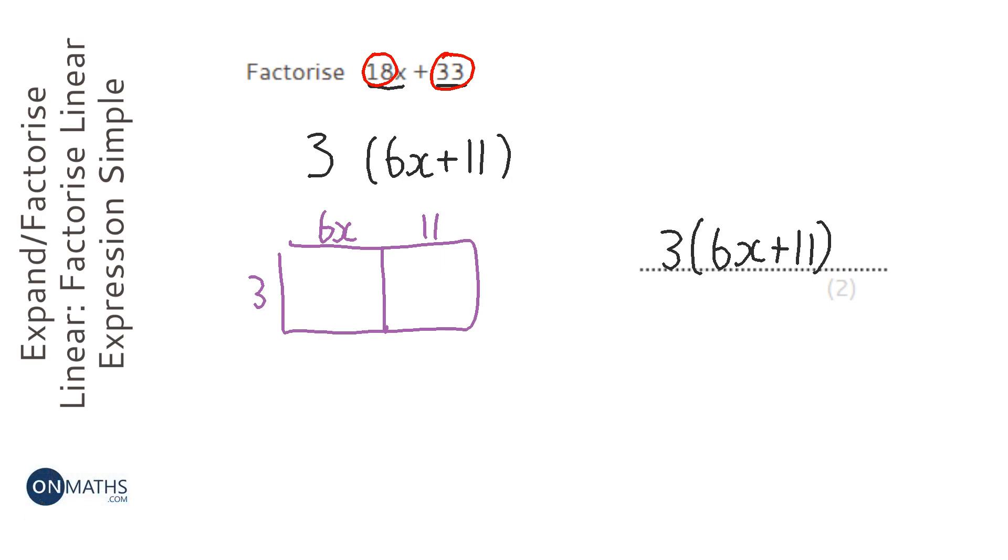3 times 6 is 18x because it's 6x, and 3 times 11 is 33. So we've got 18x plus 33, which was the question. So we know it's correct.